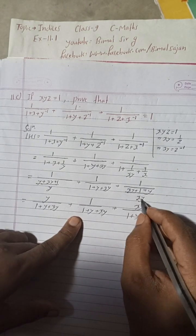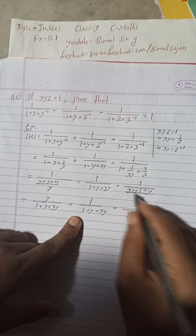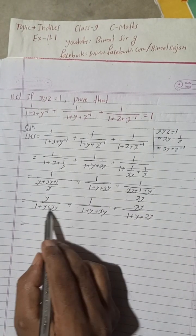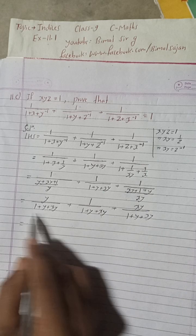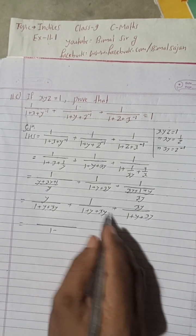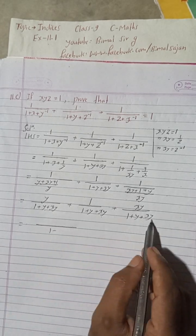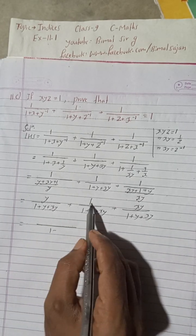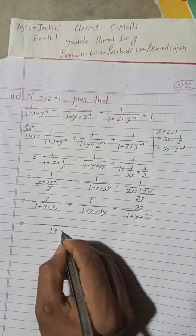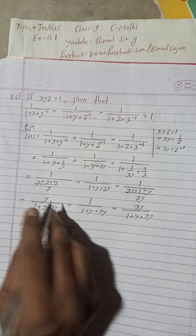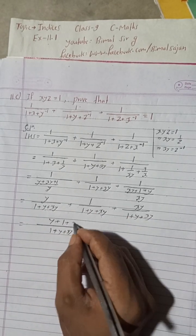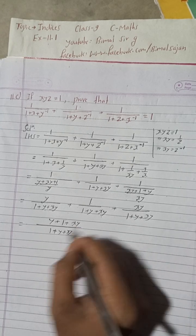Now we can see these are all the same: 1+y+xy. So we can take the LCM here, 1+y+xy. Since all are same, we can add: y+1+xy.